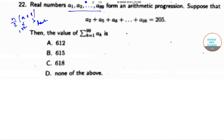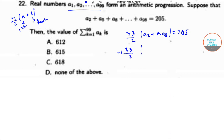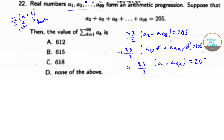We can write this as 33/2 into (a₂ + a₉₈) equals 205, where n equals 33. Now a₂ equals a₁ plus d and a₉₈ equals a₉₉ minus d, so the plus d and minus d cancel out. Therefore 33/2 into (a₁ + a₉₉) equals 205. Multiplying both sides by 3, we get 99/2 into (a₁ + a₉₉) equals 615.